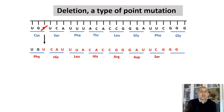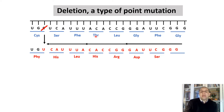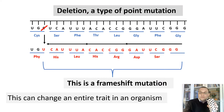Here you see a type of point mutation called deletion — cytosine has been deleted. What happens is the whole sequence shifts to the left and we end up with totally different amino acids. Where serine was supposed to be, histidine is now; where phenylalanine was, leucine is now inserted; where threonine was, histidine is inserted, and so on. It is understandable that frameshift mutations can change an entire trait in an organism.